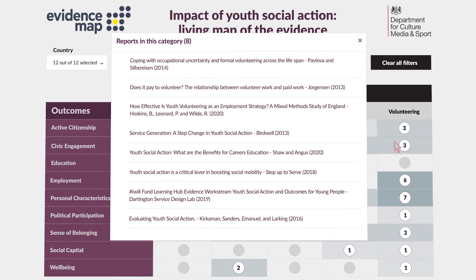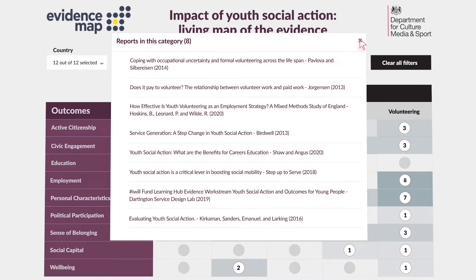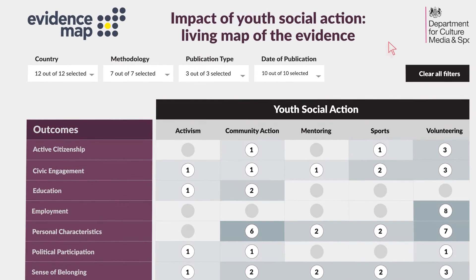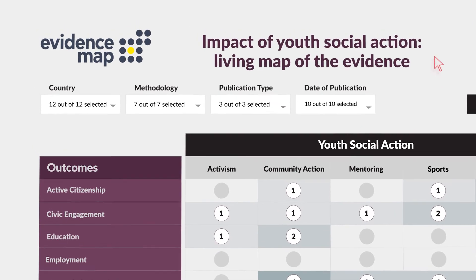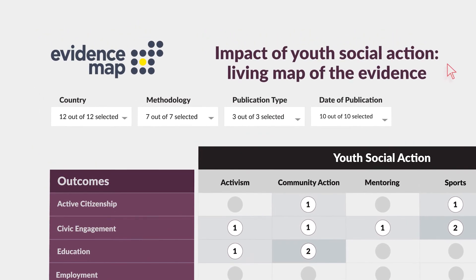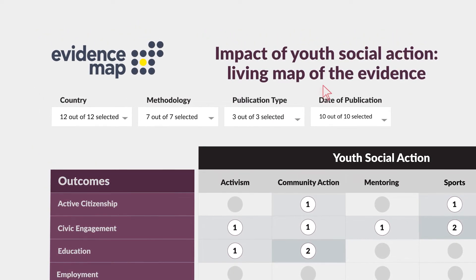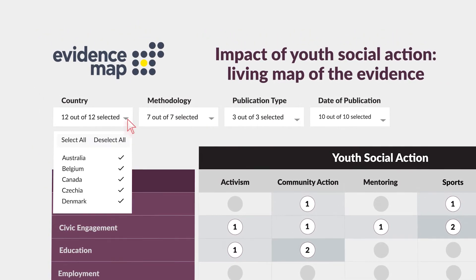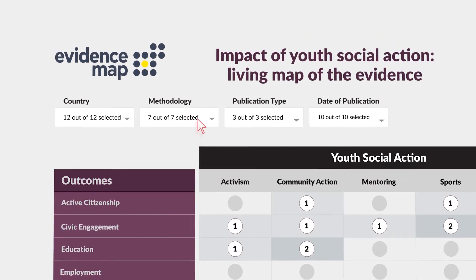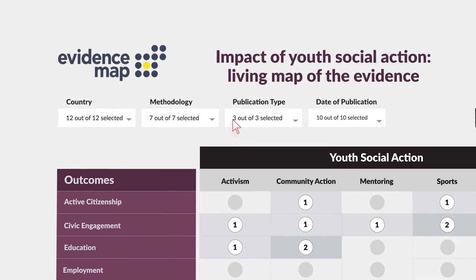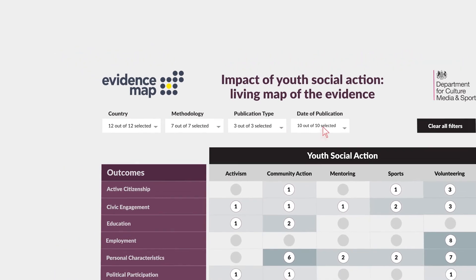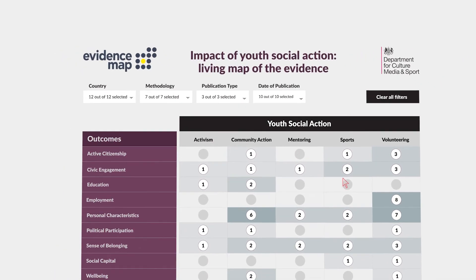But what if we're only interested in certain types of evidence, like research focusing on a specific country? EvidenceMap.com includes a filter function, enabling us to easily refine our results by a study's country, methodology, publication type, date, and more.